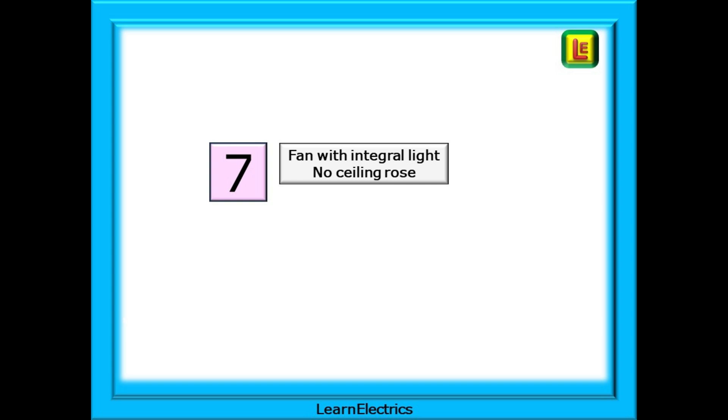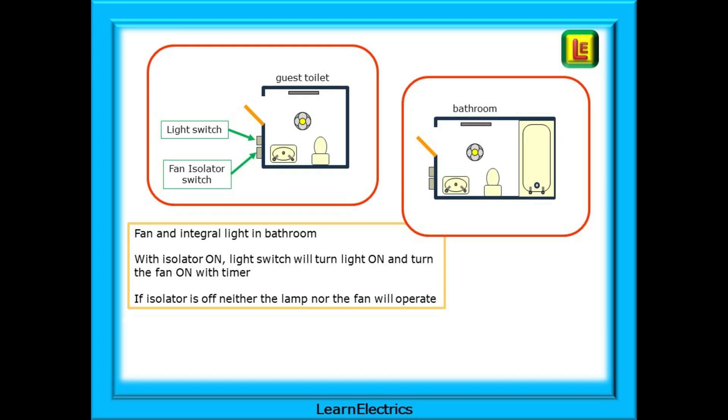And lastly number seven, a fan and an integral light where there is no ceiling rose. I came across this in a house with a small guest toilet downstairs. There was a centrally mounted extractor fan and light combination. The second example was a small bathroom in an older property with the central fan and light combination. With the isolator on the light switch will turn the lights on and turn the fan on with the timer enabled. If the isolator is off neither the lamp nor the fan will operate.